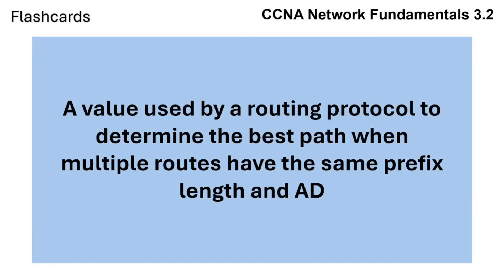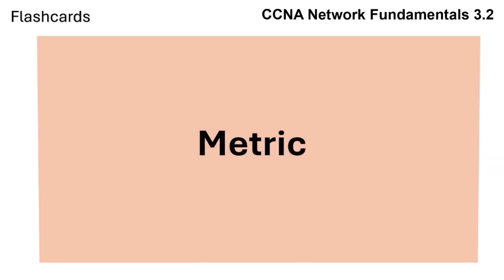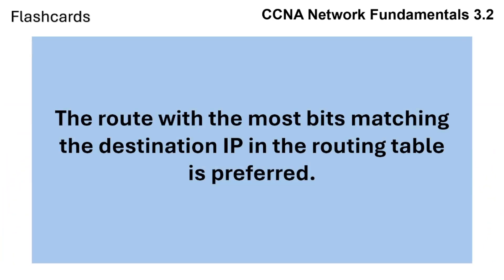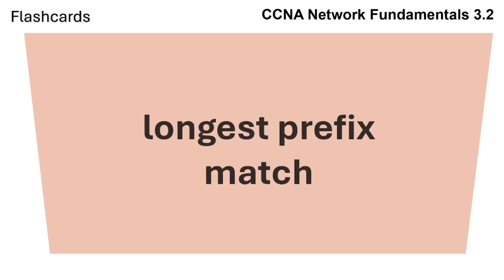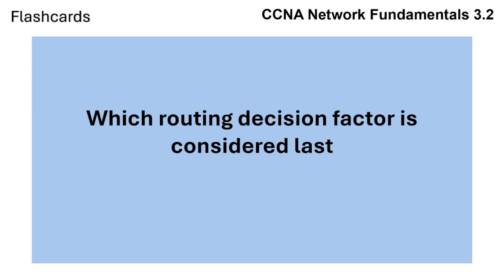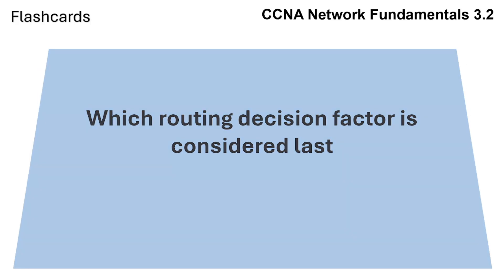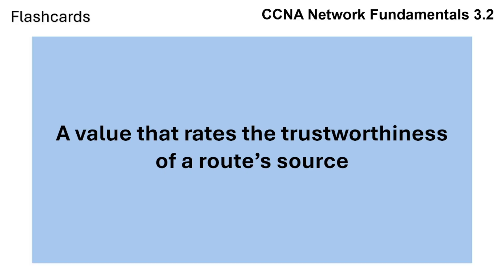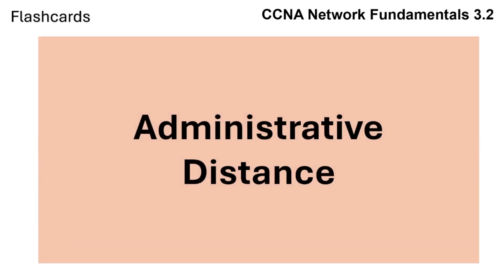Review questions: What is a value used by a routing protocol to determine the best path when multiple routes have the same prefix length and AD? What is the route with the most bits matching the destination IP in the routing table called? Which routing decision factor is considered last? And what is a value that rates the trustworthiness of a route source?